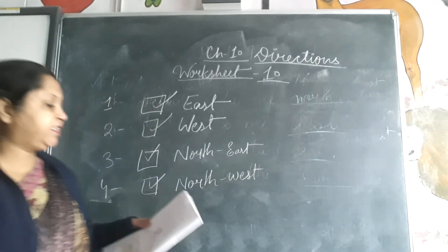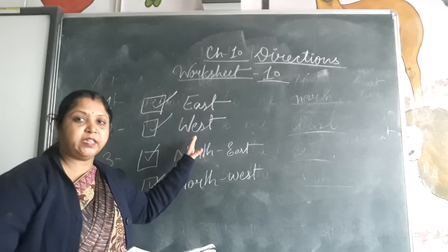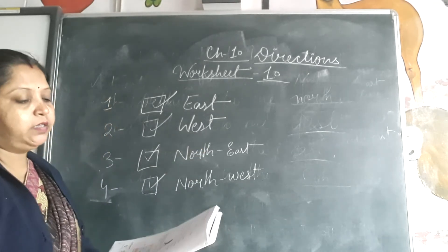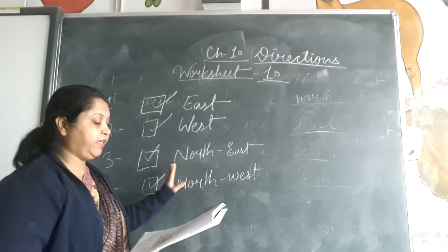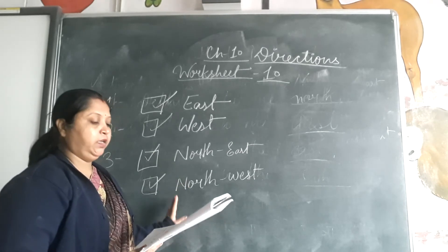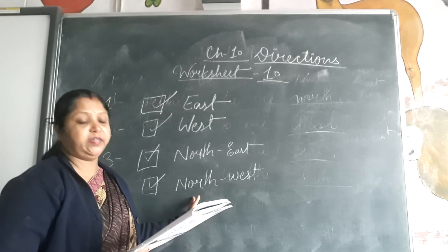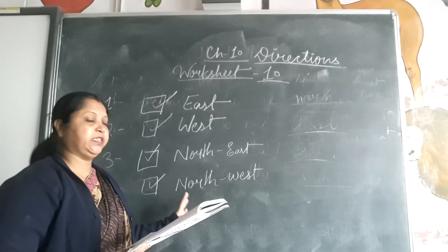Now let's explore. The sun rises in the east. The sun sets in the west. The direction halfway between the north and east is northeast. The direction halfway between the north and west is northwest.